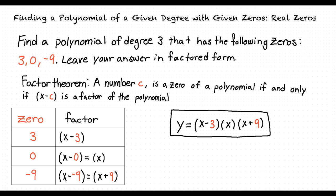Multiplying out our factored polynomial, we get an equation equal to x cubed plus 6x squared minus 27x. The highest power that x is raised to in this equation is 3, which means our polynomial has a degree of 3, which is what our problem was asking for.